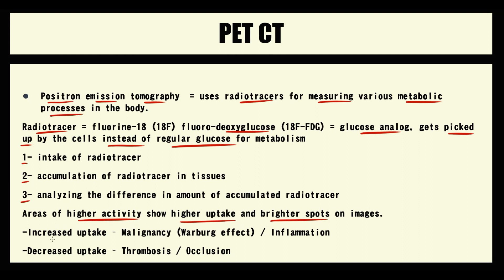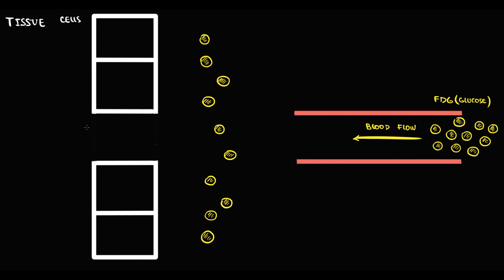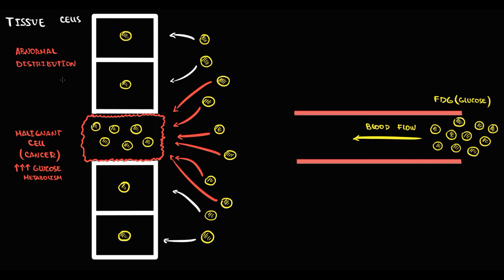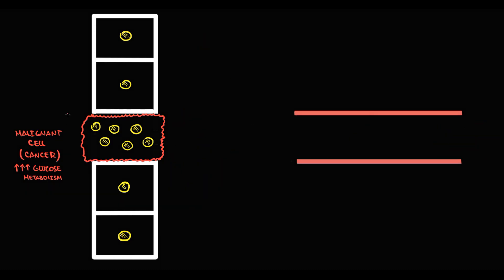Certain disorders can affect normal glucose metabolism in tissues. Conditions that cause increased glucose uptake include cancer, because cancer cells consume glucose via the Warburg effect. Due to anaerobic glycolysis, cancer cells consume glucose faster than any other cell. While a malignant cell consumes 6 glucose molecules, normal cells in the same time period consume just one. As a result, the distribution of radiotracer becomes completely abnormal — there is a high accumulation of glucose in the malignant cell and only a small amount in normal cells.